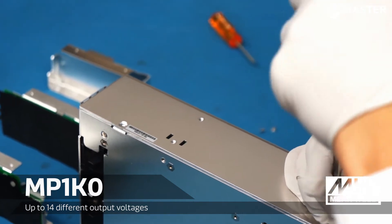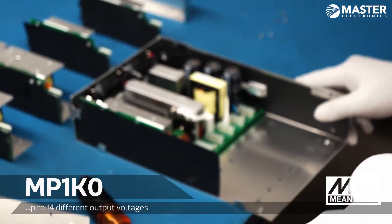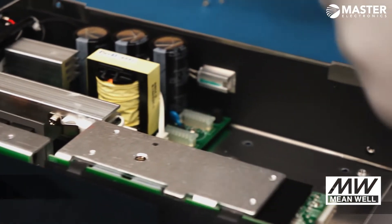The 1000 watt MP1K0 chassis can be configured with up to 14 different output voltages. The minimum order quantity is one and lead time is typically one or two days.